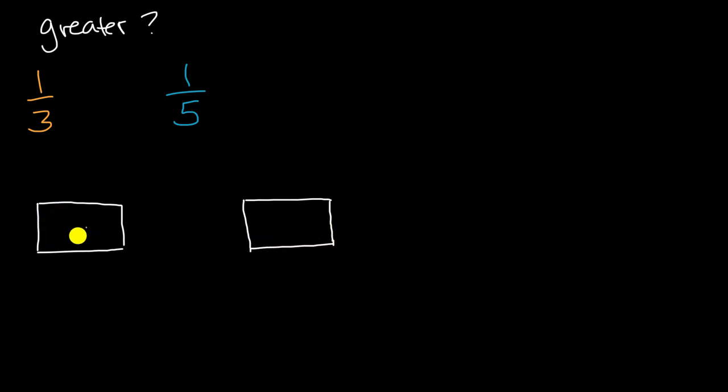And now how would I represent a third? Well, I would divide this whole into three equal sections. And so I'm going to try to divide it into three equal sections. So those three equal sections right over there, or they're supposed to be three equal sections. These are hand-drawn, so give me a little slack. But one of these three equal sections, well, that's one-third. So that is one-third right over there.